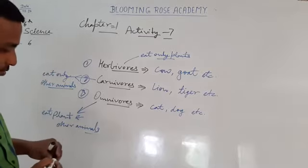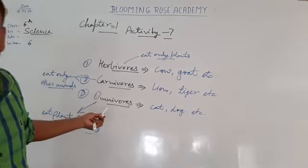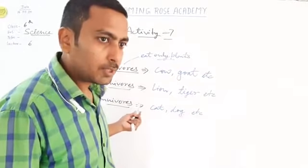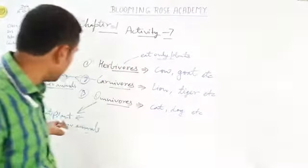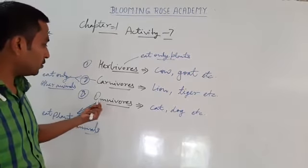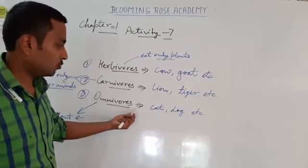Animals which eat plant and other animals, both. So those animals which eat both, that is plant or other animals, that is omnivores. O-M-N-I-V-O-R-E-S, omnivores.